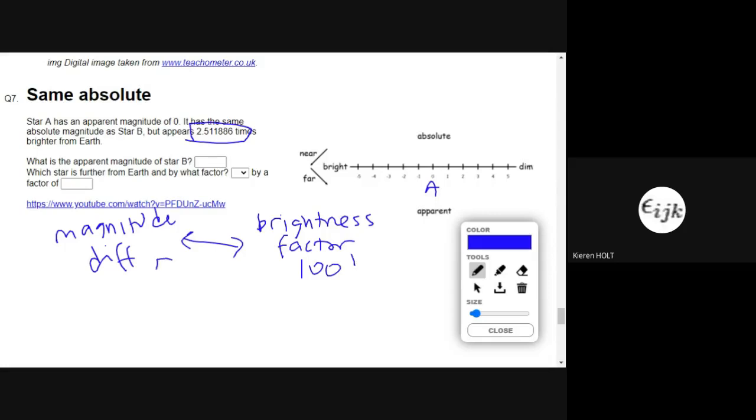100 corresponds to a magnitude difference of 5. What would 2.511886 be as a power of 100? I'm going to work that out. I'm going to do the log of that number and divide it by the log of 100. So that is 100 to the power of 0.2, and that tells me that the magnitude...